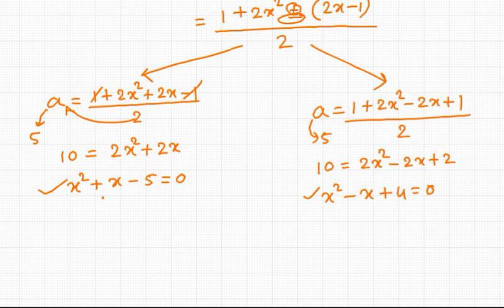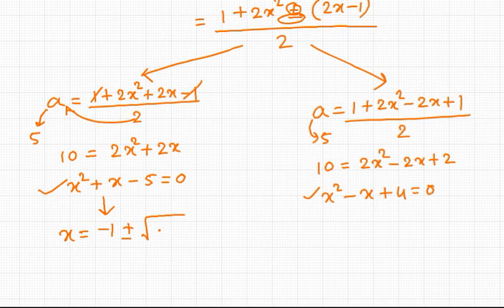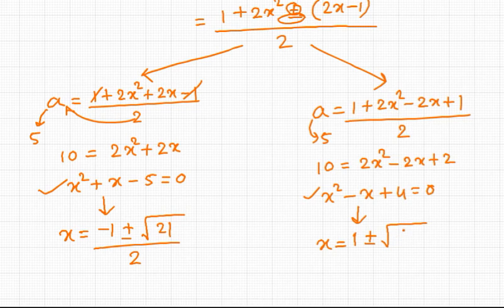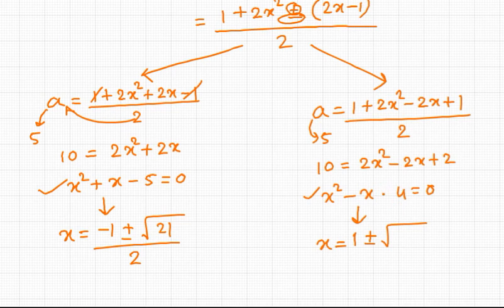Solving the first quadratic x squared plus x minus 5 equals 0, the value of x comes out to be (minus 1 plus or minus root 21) divided by 2. Solving the second equation, applying the Sridharacharya formula with discriminant giving root 17, x equals (1 plus or minus root 17) divided by 2.